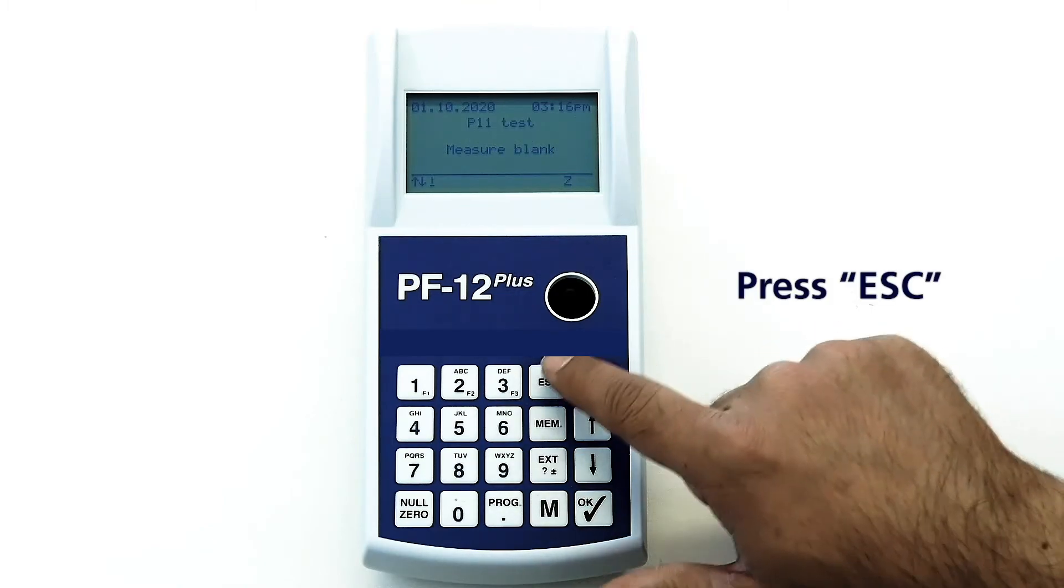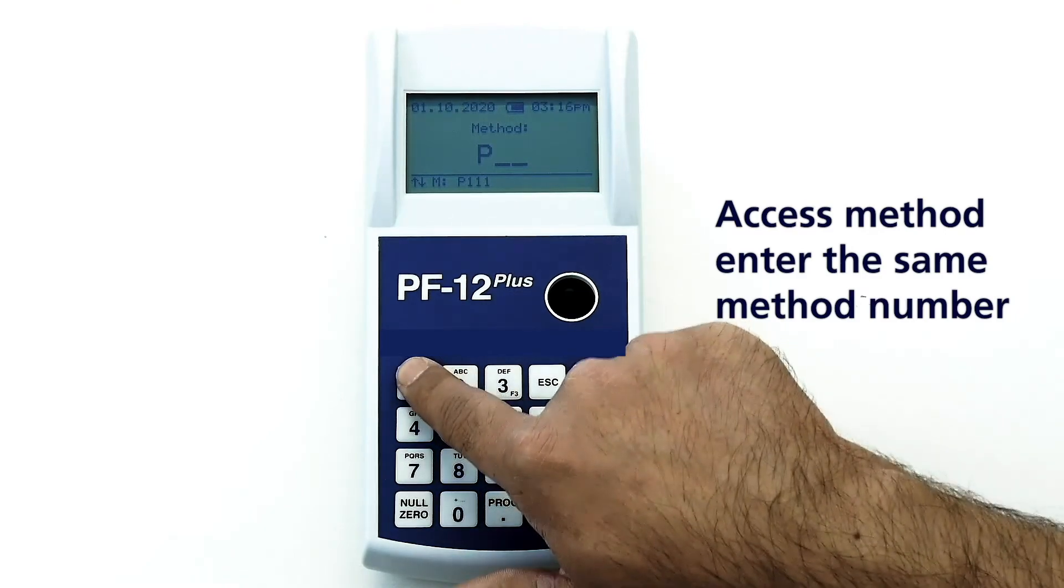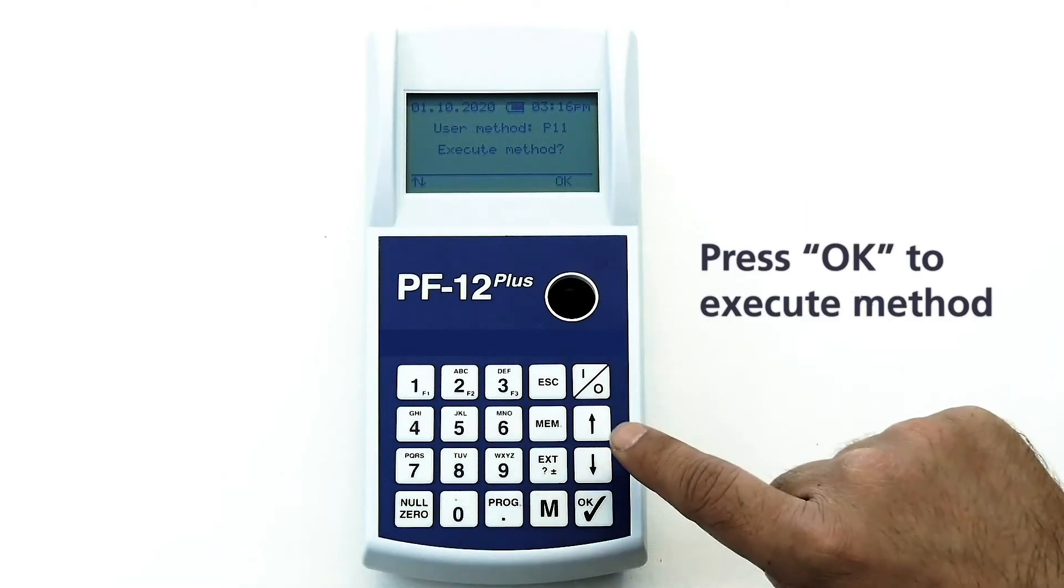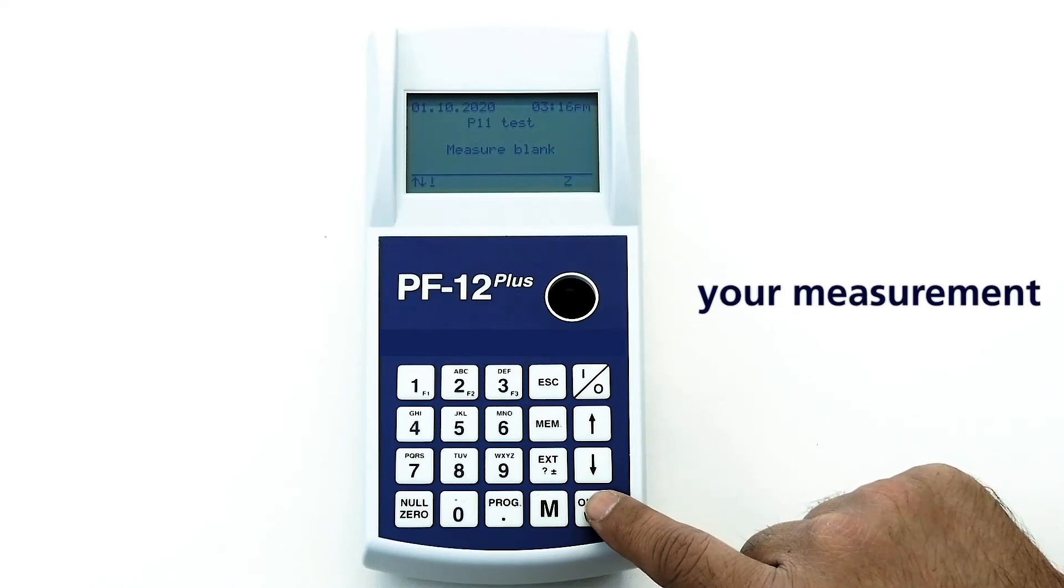Press escape. To accept method enter the same number. Press OK to execute method. Now you can start your measurement. That is all.